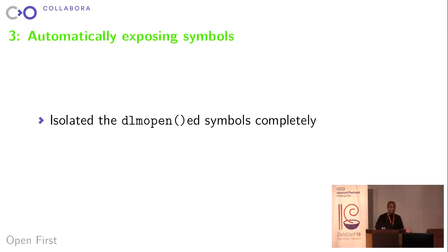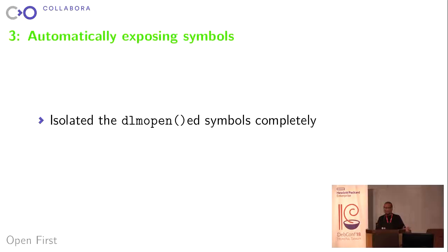So we've achieved step one. We've loaded a library and isolated its symbols completely from the main program. But now we've done that work, we need to undo some of it, because we want this to be automatic. Some libraries need to see these symbols, and they need to do it without us doing any further work.